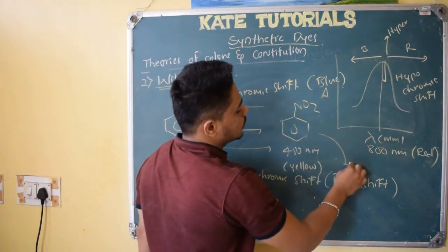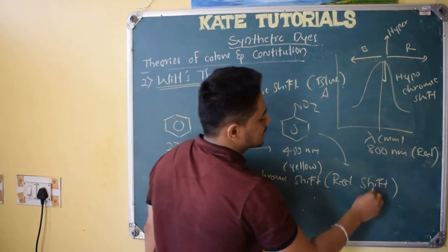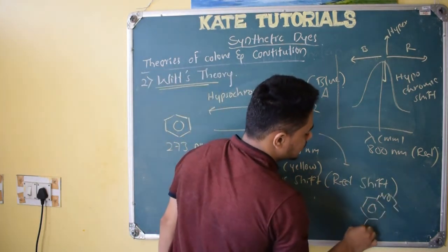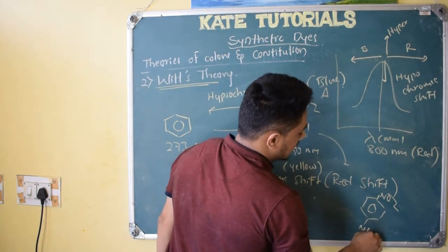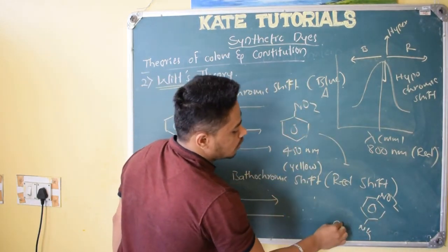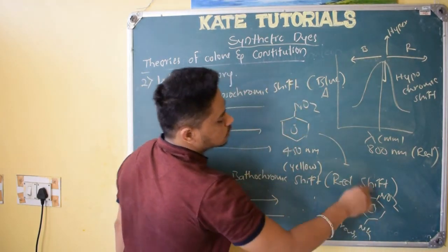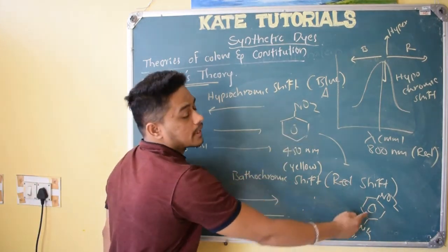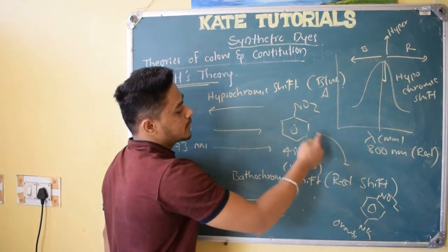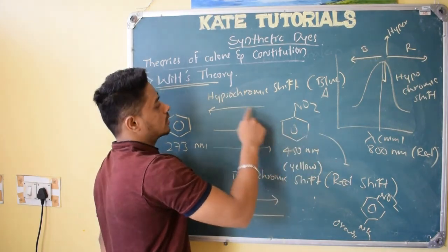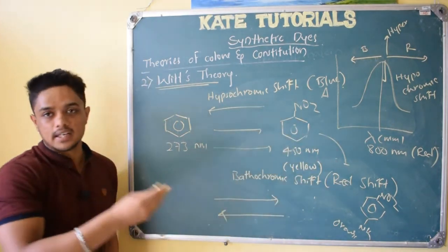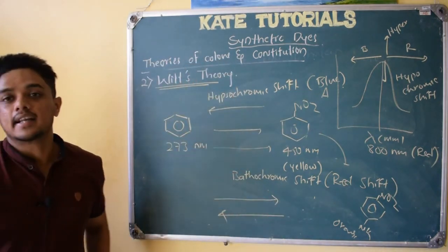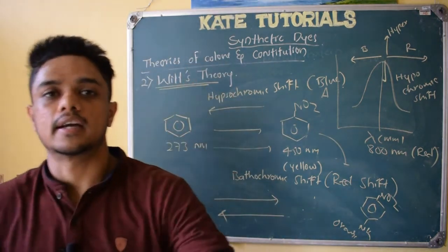Adding an auxochrome — like NH₂ — to nitrobenzene further shifts from pale yellow to orange color, which is also a bathochromic shift. Coming in reverse would be a hypsochromic shift. So this is all about Witt's theory, chromophores, auxochromes, and the associated spectral shifts — bathochromic, hypsochromic, hyperchromic, and hypochromic. In the next class, we will see one more theory. Till then, take care.